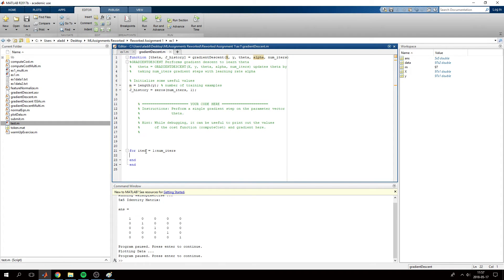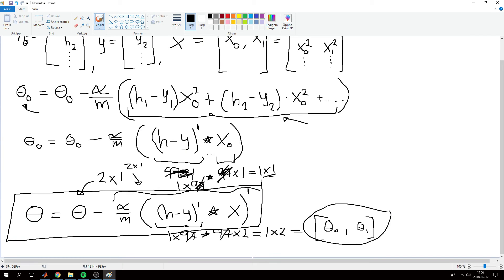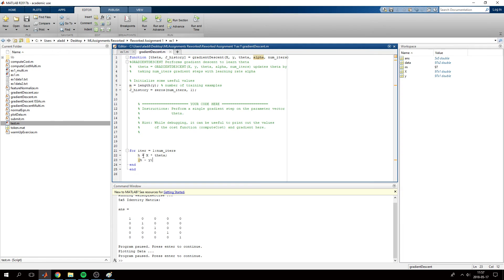Let's go to our gradient descent. First we need to calculate h, which is x times theta, as we saw in the last video. And then we will take that h minus y. So theta will be equal to theta minus alpha over m times h minus y transpose to make it a 1 by 97 times x.